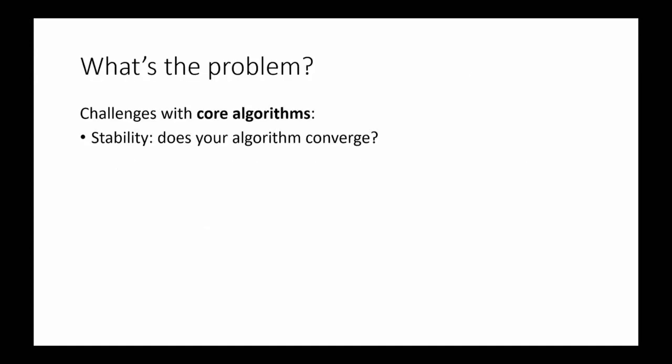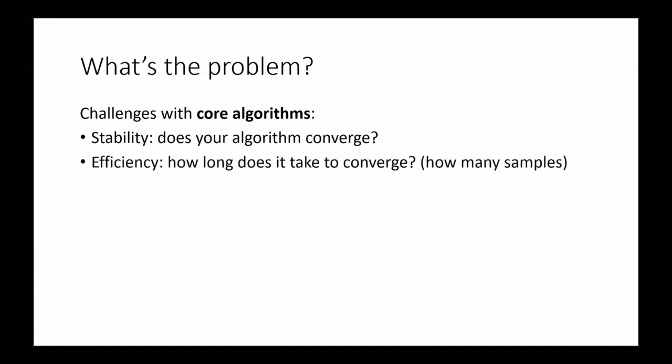Challenges with core algorithms include stability — does your algorithm converge easily, is it easy to pick hyperparameters, does it work reliably as you change the problem? This is hopefully stuff you noticed in your homeworks. There's also efficiency — how long does it take to converge? Can you start homework three four hours before the deadline, or do you really need to start twelve hours before? This is particularly important for complex or real-world tasks.